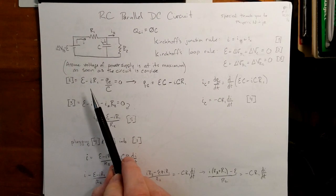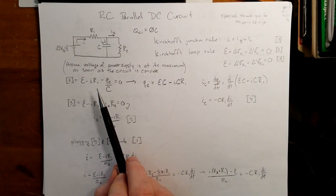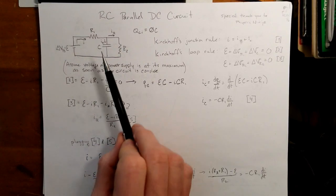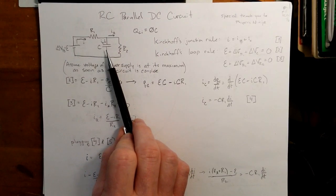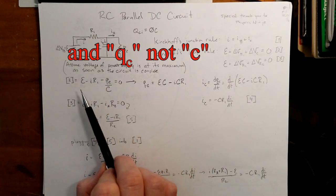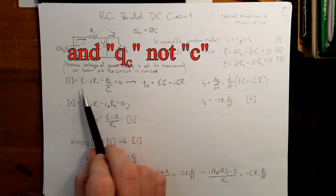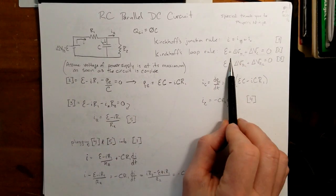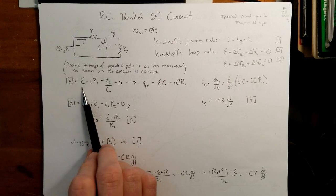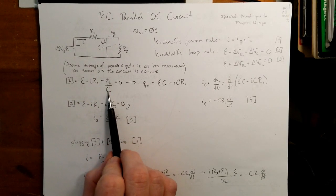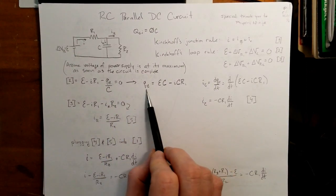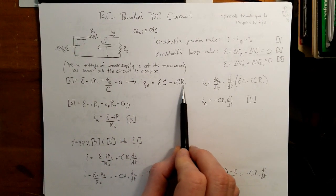Now, I am making the assumption that the voltage of the power supply is at its maximum as soon as I complete the circuit, and that the capacitance here will build up in charge. So that's why I'm using the lowercase for I and C. Taking equation 2, plugging in my equations that I know for voltage of resistors and voltage of capacitors, I have epsilon minus IR1 minus QC over C is equal to 0, and then if I solve for QC, I get epsilon C minus ICR1.